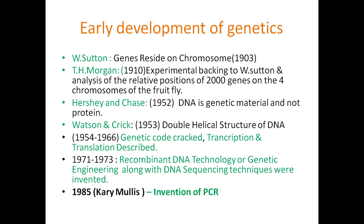W. Sutton, in 1903, discovered that genes reside on chromosomes. Later on, T.H. Morgan in 1910 gave experimental backing to Sutton and studied the related positions of approximately 2000 genes in Drosophila melanogaster — that is the fruit fly — on its four chromosomes. These were the very basic studies done during the early 1900s.